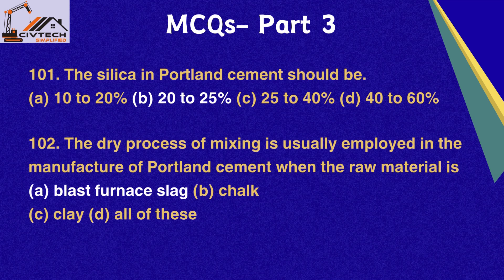Question 101. The silica in Portland cement should be: A. 10–20%, B. 20–25%, C. 25–40%, D. 40–60%. Correct option B: 20–25%.